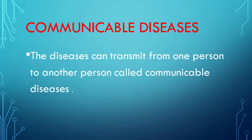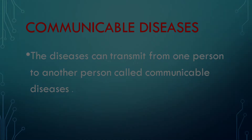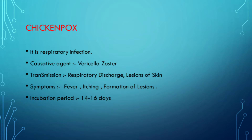A disease that can transmit from one person to another is called a communicable disease. First, we will see chickenpox. It is a respiratory infection. The causative agent is varicella-zoster. Transmission of the disease is done by respiratory discharge and lesions of the skin. Symptoms include fever,